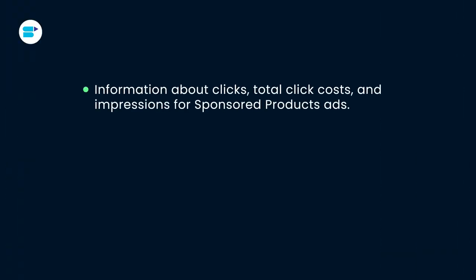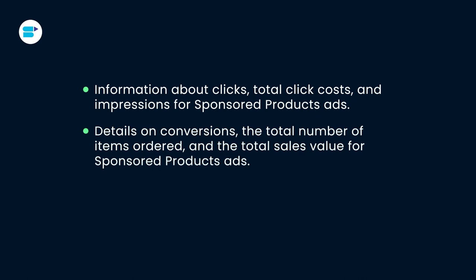But now, Amazon has introduced Amazon Marketing Stream, a new tool that provides almost real-time Amazon advertising data. This is different from the Advertising API because Amazon sends you data every hour without you having to ask for it. It's also more detailed than before. With Amazon Marketing Stream, you get information about the clicks, total click costs, and impressions for sponsored product ads, as well as details on conversions, the total number of items ordered, and the total sales value for sponsored product ads.